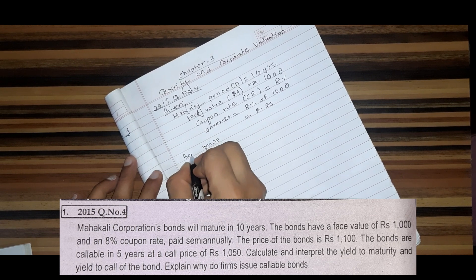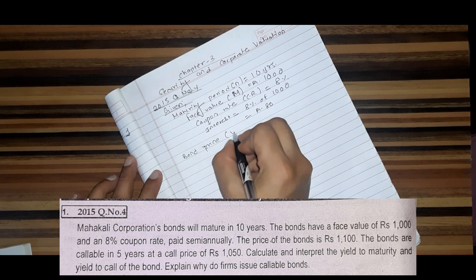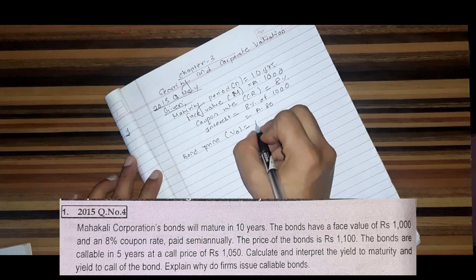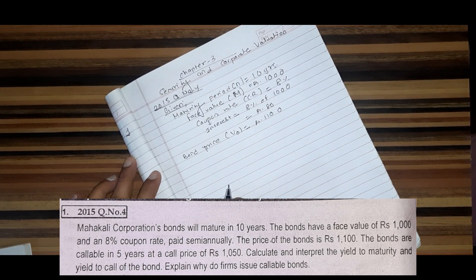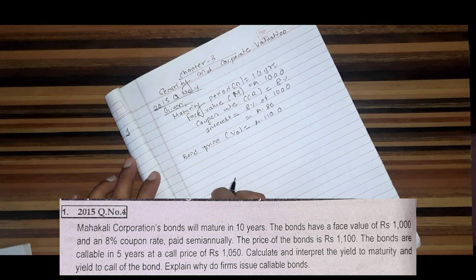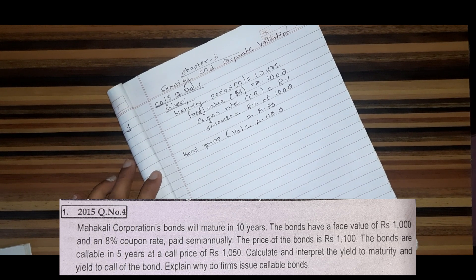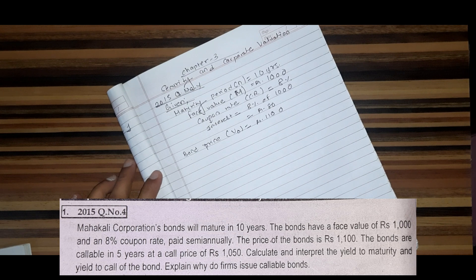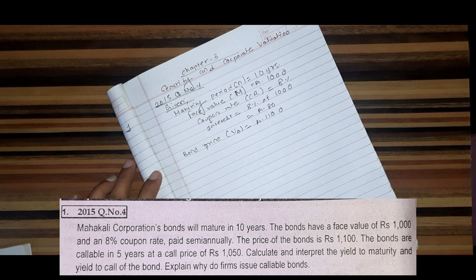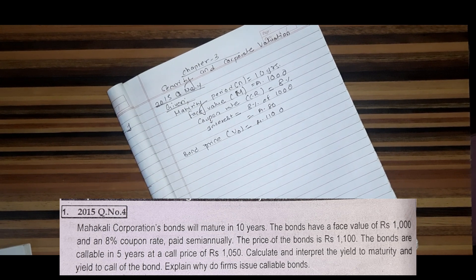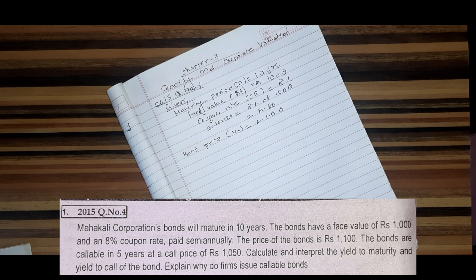The bond price and the selling price. The bond is called in five years at the price of rupees 1,050. The bond is called in five years at the price of 1,050.